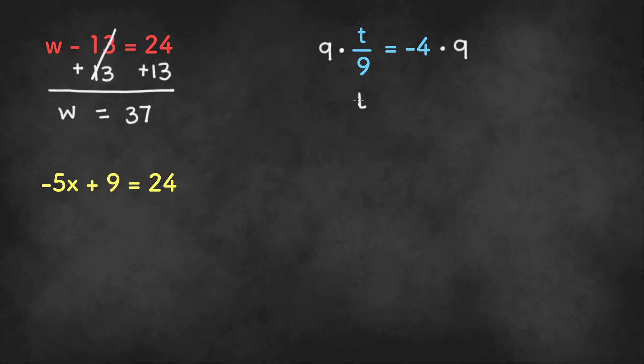Once we do so, we are left with t on the first side and negative 4 times 9 is negative 36 on the right side. And that would be the final solution.